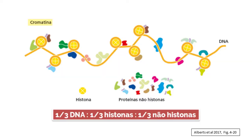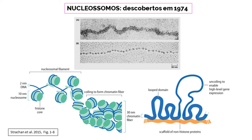Como visto anteriormente, a cromatina é uma estrutura que consiste de DNA fisicamente associado a muitas proteínas, cerca de um terço de DNA e dois terços de proteínas, que podem ser de dois tipos: as histonas, que têm carga positiva e se ligam fortemente ao DNA, sendo muito importantes para o seu empacotamento; e as proteínas não histônicas, que exercem outras funções, incluindo servir de arcabouço ou esqueleto para a forma cromossômica.